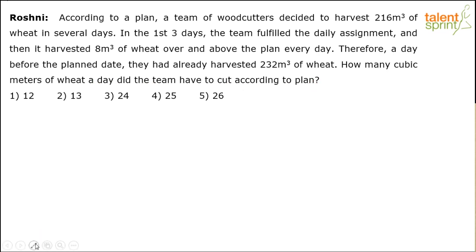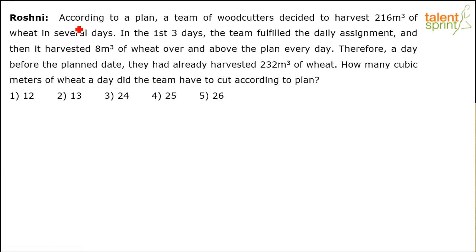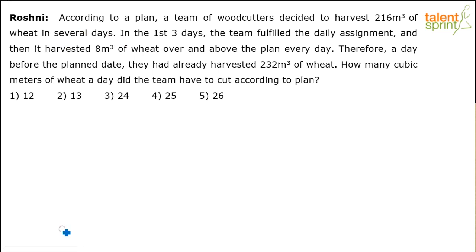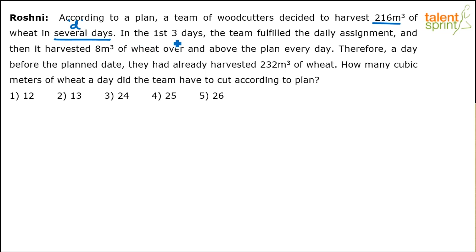Let me use a pen here. There is a plan where a team of woodcutters decided to harvest 216 cubic meters of wheat in several days. The number of days is not known to us. The amount of work to be done is 216 cubic meters — that's the work in some number of days. Let's assume the number of days is d.